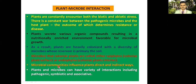Microbial communities influence plants in direct or indirect ways. Plants and microbes can have a variety of interactions including pathogenic, symbiotic, or associative. Some microbes that interact with plants may cause disease and are called pathogens, while some microbes that reside in plant roots and benefit the plant are called symbiotic microbes.